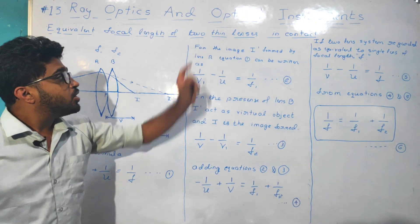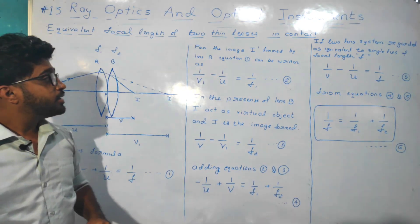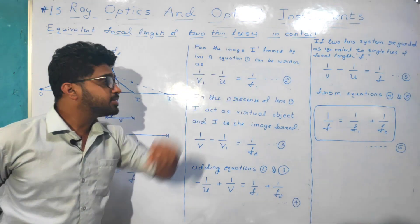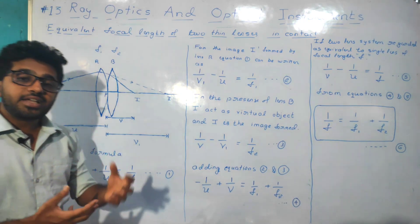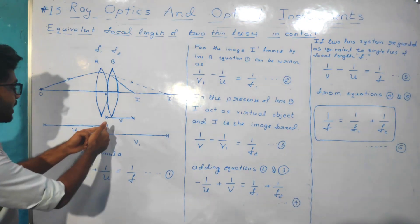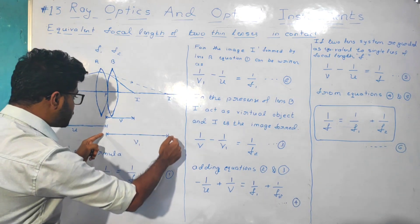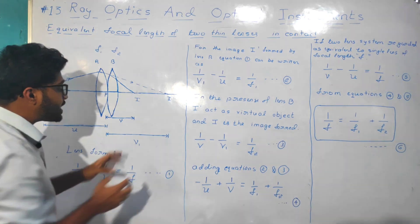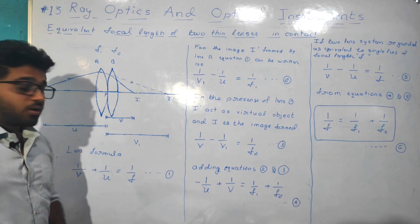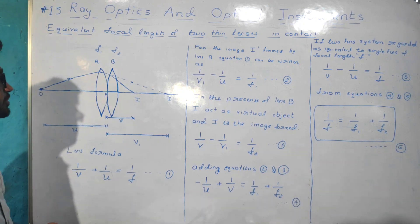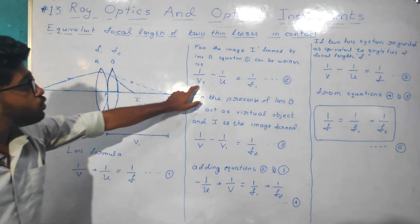For the image I dash formed by Lens A in the absence of Lens B, the focal length is F1. The object distance is u, and the image distance for I dash is v1. So we write 1 divided by v1 here, and 1 divided by u for the object distance.